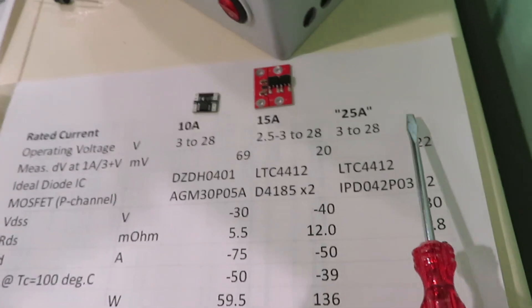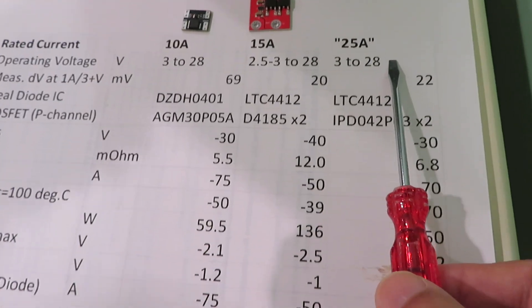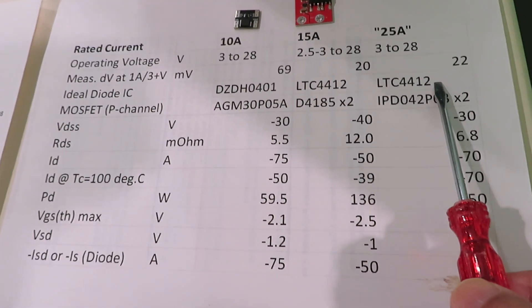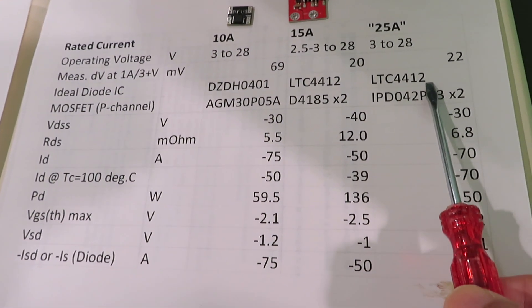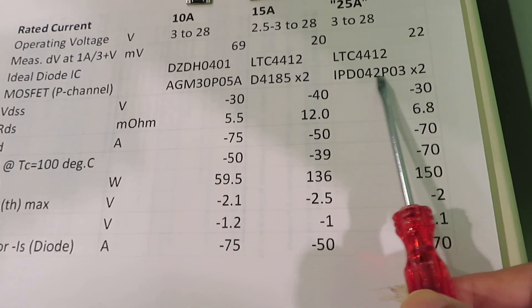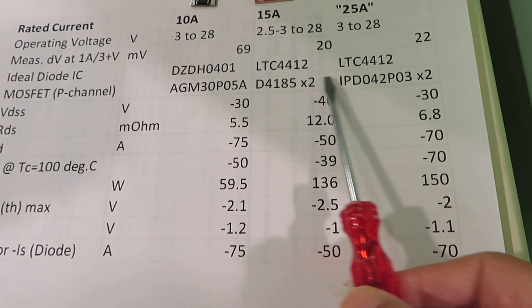So I decided to make a 25 amp using the same controller ideal diode IC but replacing the MOSFET with a couple of MOSFETs that are higher performing than this.